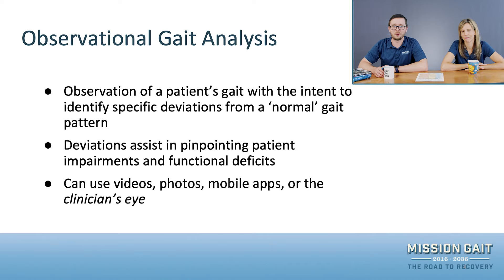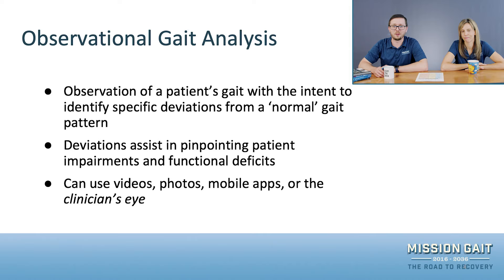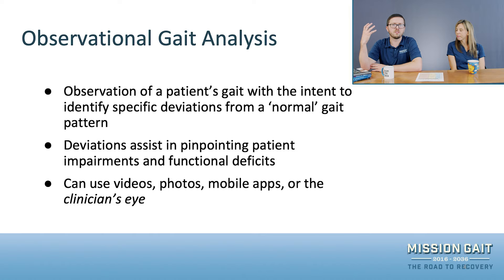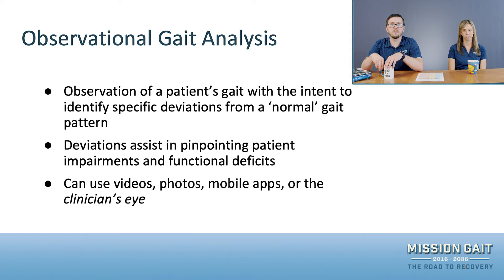Any good lecturer needs to start off with definitions, so that's what we're going to dive into now. Observational gait analysis is basically the observation of a patient's gait with the intent to identify specific deviations from a normal gait pattern. It's really important that you understand what a normal gait pattern looks like. If you've got a good concept of that, deviations are going to stand out strongly because you'll know what to expect in terms of range of motion, whether a particular phase is missing, etc. If you haven't reviewed gait in a while, we certainly recommend you check that out before diving deeper into this lecture series.